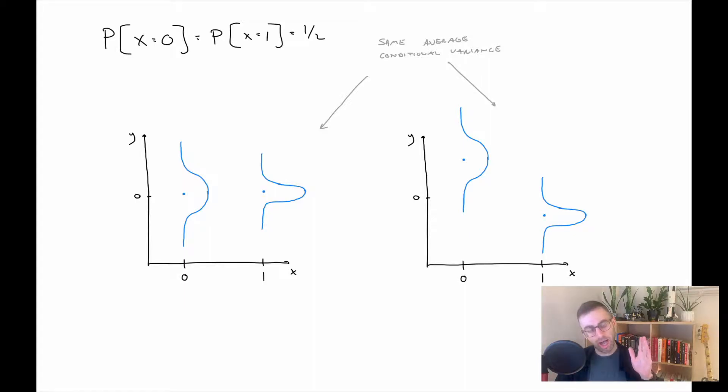So Y conditioned on X in both pictures—so Y condition on X equals zero, both those have the same conditional variance, just where the mean is is different. And then same thing when X is one: same conditional variance but where the mean is different. So if you took the average of these conditional variances, it would be the same in both graphics, except in the right hand one there is more total variance that is in Y because of the fact that now instead of both having the same conditional mean, they have different conditional means. So the overall spread of Y is bigger. Maybe not the best picture but hopefully that makes the idea somewhat clear.